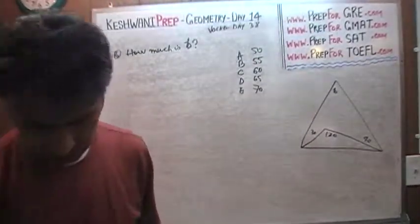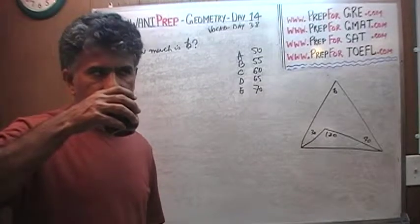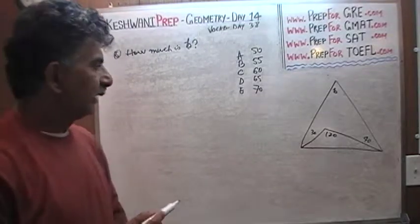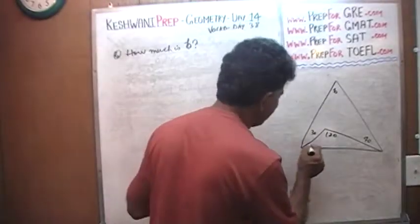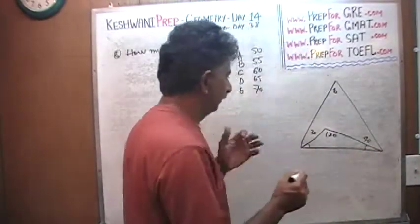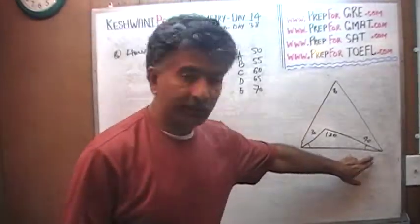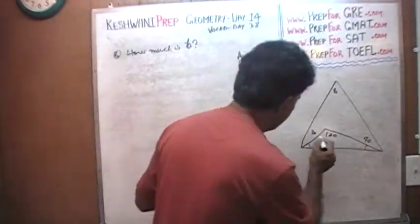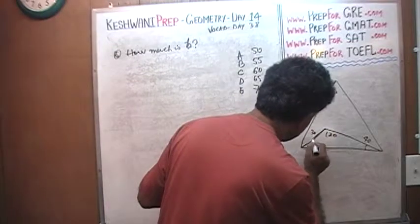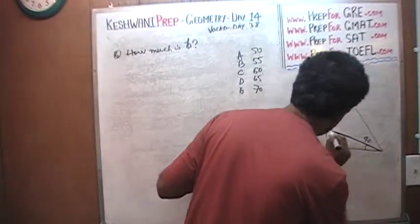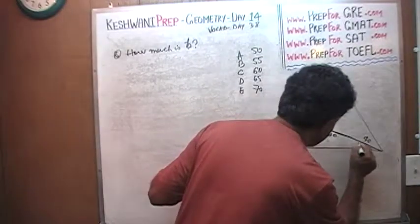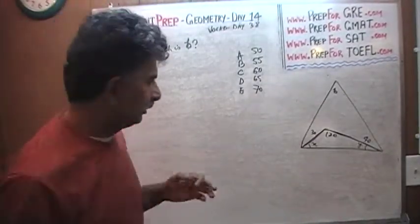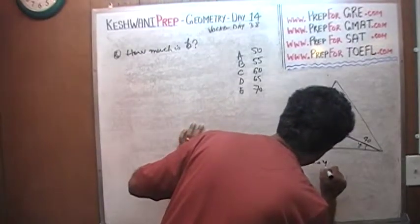I'll give you a couple of seconds to pause and unpause. So if you are sitting there asking yourself, how can we figure out B? We know nothing about this angle and that angle. Yes, that is true. We know nothing about this angle and that angle, but we do know something about two of them together. Look at the small triangle here. This triangle here. We know that this is 120. Let's call this x and y.